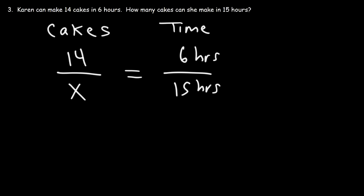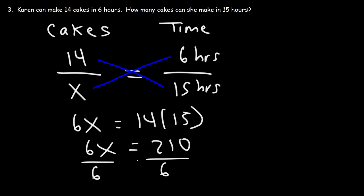So now let's cross multiply. This is going to be 6 times x, and that's going to equal 14 times 15. Now 14 times 15 is 210. So now, in order to separate 6 from x, we need to divide them. We need to divide both sides by 6. So it's going to be 210 divided by 6, which is 35. So in 15 hours, she can make 35 cakes. So that's the answer.